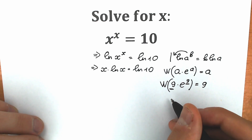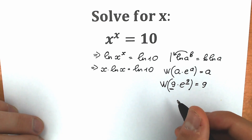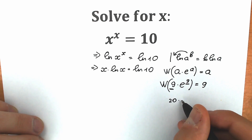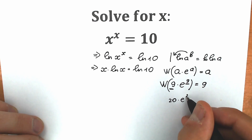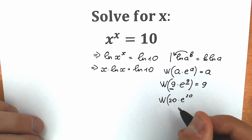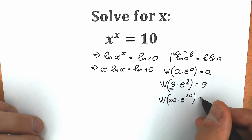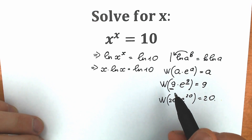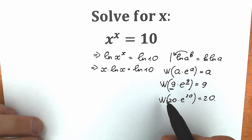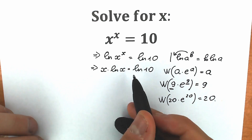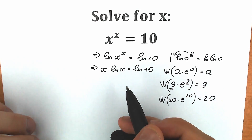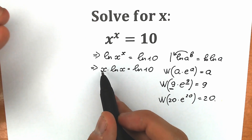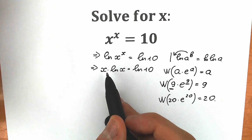Just one more example: if we have 20 times e to the power 20 and apply Lambert W function, the result is only 20. So I hope you understand the Lambert W function. Right now, looking at what we have, we don't have e, and we don't have the same expression in both places. This is a problem for us.